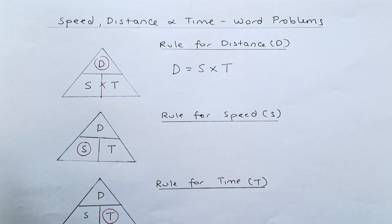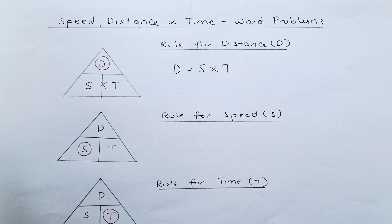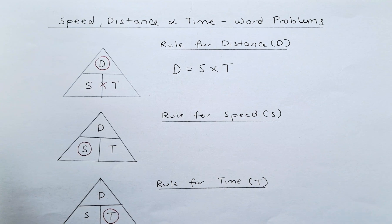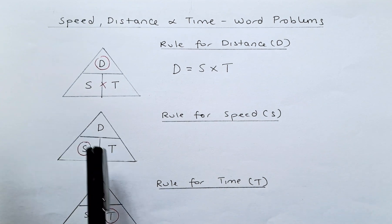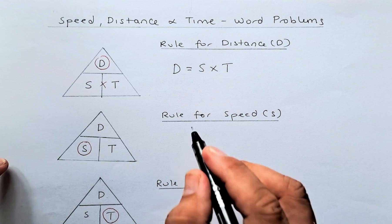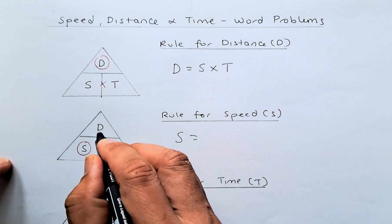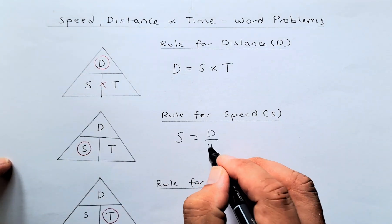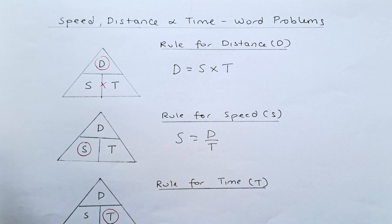Now we're going to calculate the rule for speed. We are going to circle the speed because speed is represented by the letter S. So now you've got D and T, so the speed is equal to D divided by T because D is on top of T, so we divide them.